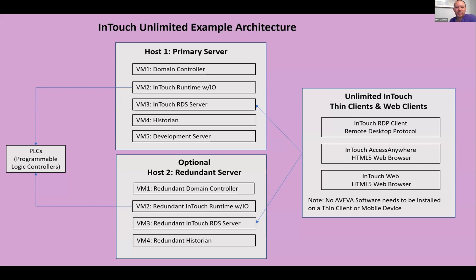With InTouch Unlimited Perpetual, you have an option to purchase a redundant server at 50% of the cost of the primary server license. That gives you all the same capabilities as the primary server: a redundant InTouch server, a redundant InTouch web server, and a redundant Historian. If you choose to have redundancy, that option is available at a very affordable one-time cost.